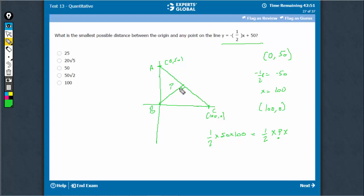What would be the value of AC here? AB is 50. This is 100. So 50 square plus 100 square. Take 50 square common, you get 1 plus 4. Take square root of this to find the value of AC. This is 50 square root 5.